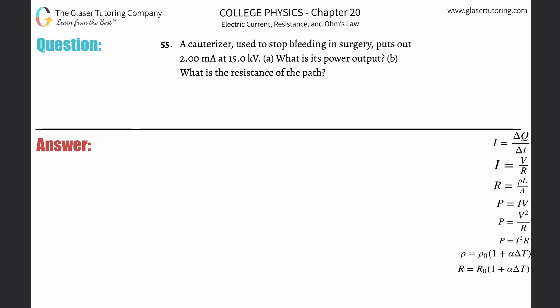Number 55, a cauterizer used to stop bleeding in surgery puts out 2 milliamps at 15 kilovolts. What is its power output?